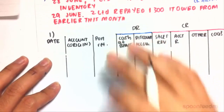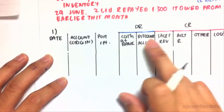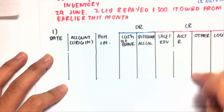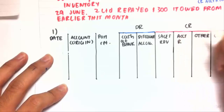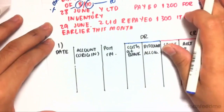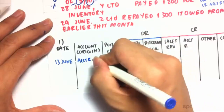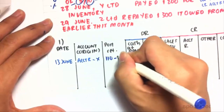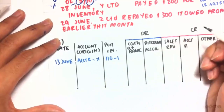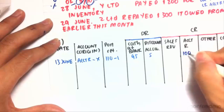So how do we record these? We have columns for: cash at bank, discount allowed, sales revenue, accounts receivable, and other for miscellaneous inflows like donations. For the first transaction on the 13th of June, the account name is accounts receivable — XLTD, post reference 100-1. We received $95 cash at bank because there was a $5 discount allowed, and we credit $100 of accounts receivable. The journal entry includes a debit of discount allowed $5, a debit of cash $95, and a credit of accounts receivable $100.